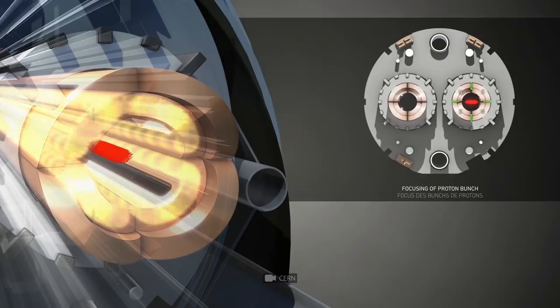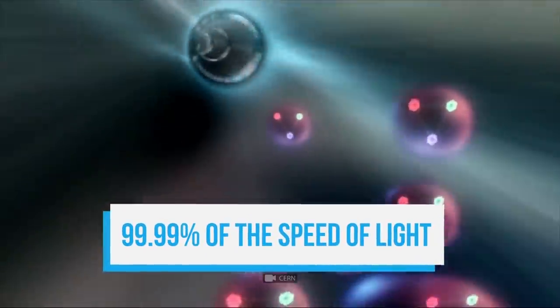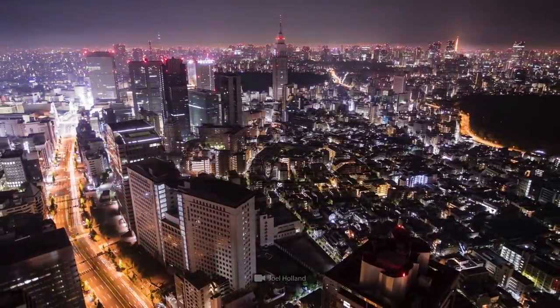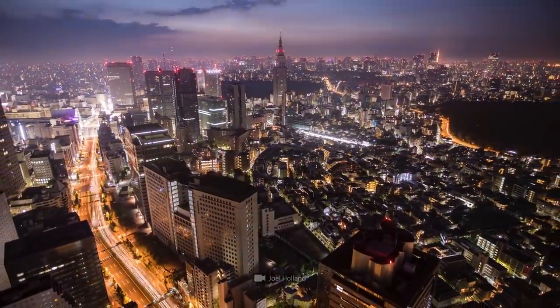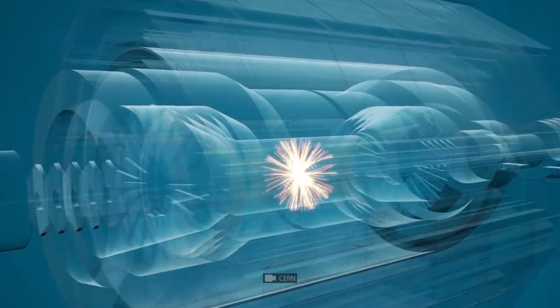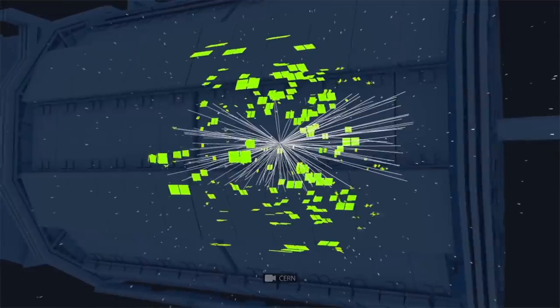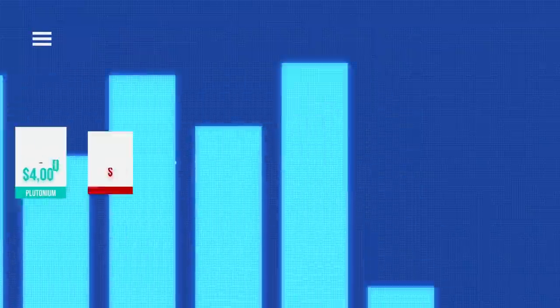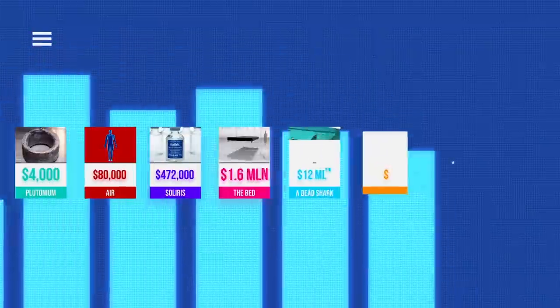To produce antimatter, the particles are accelerated to 99.99% of the speed of light. It takes 120 megawatts of electricity. That's about as much as a big city consumes in 24 hours. Antimatter is very difficult to produce. That's why it's so expensive. So it turns out antimatter is the most expensive thing on Earth.